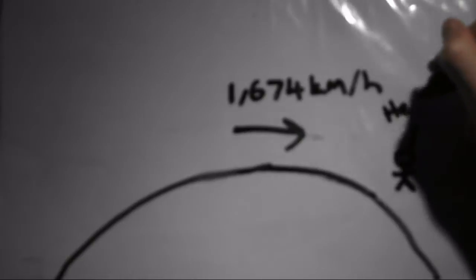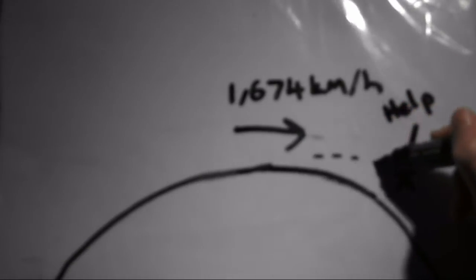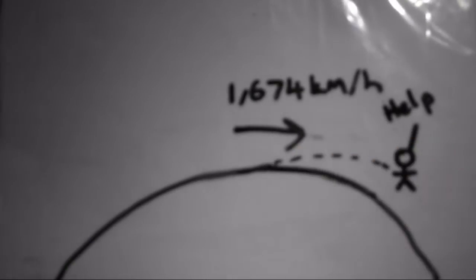If Earth was to suddenly stop spinning, everything would obviously keep moving around at this speed until it hit something, or began to slow down due to air resistance.